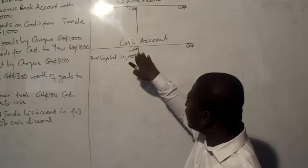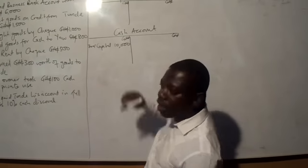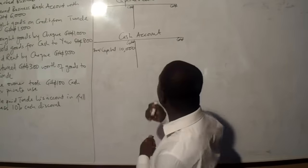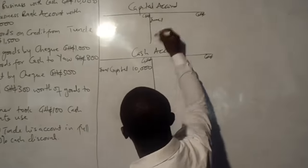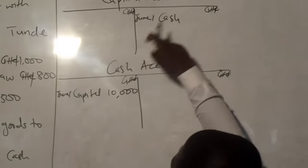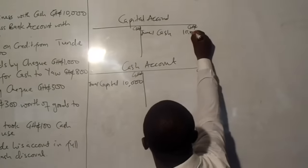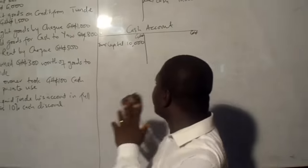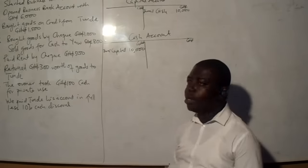Once I finish debiting cash in the name of capital, I come to the credit side. I go to the credit of the capital account. The same date is June 1, and this time it will be in the name of cash, because the corresponding entry is in the cash account. The amount is 10,000. So that is the first transaction.